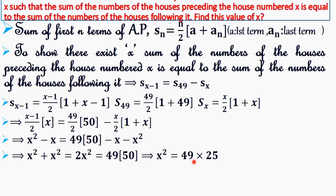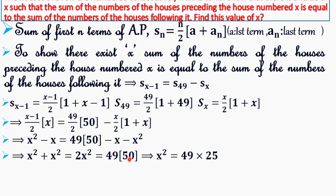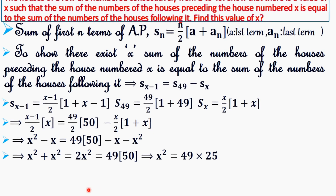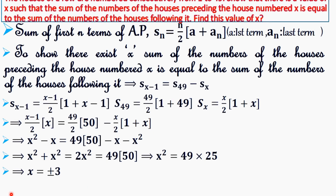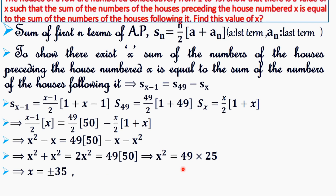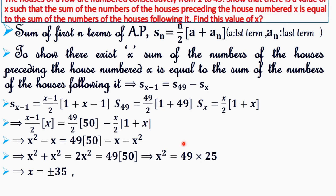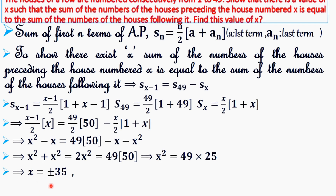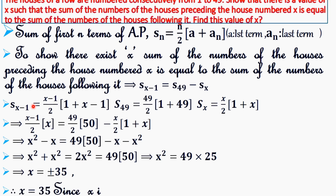So x² = 49 × 25 = 1225, which gives x = ±35. We choose x = +35 since x denotes a house number and must be positive. Therefore, we have found a value of x = 35 that satisfies the condition given in the problem.